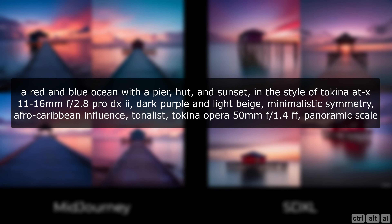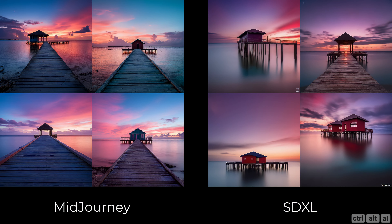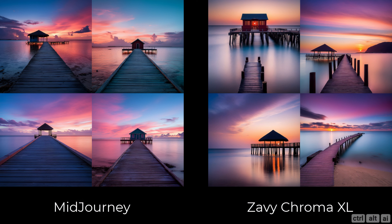Prompt: a red and blue ocean with a pier, hut, and sunset in the style of Tokina at 11-16mm f/2.8 Pro DX2, dark purple and light beige, minimalistic symmetry, Afro-Caribbean influence, tonalist, Tokina Opera 50mm f/1.4, panoramic scale. The only difference I can see is that MidJourney has given the same perspective with more realistic options. In Stable Diffusion, only the second top-right image is realistic enough. Using a checkpoint made some difference, but again they are very similar in aesthetics, colors, and long-exposure photography.